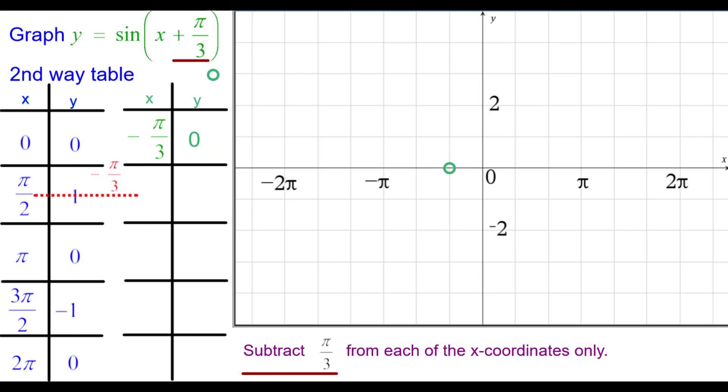Pi over 2 minus pi over 3. Well, we need to get a common denominator which would be 6. 3 sixths minus 2 sixths is 1 sixth. So pi over 6. Keep the y coordinate the same at 1. So pi over 6 comma 1. Halfway between 0 and pi over 3 would be pi over 6.